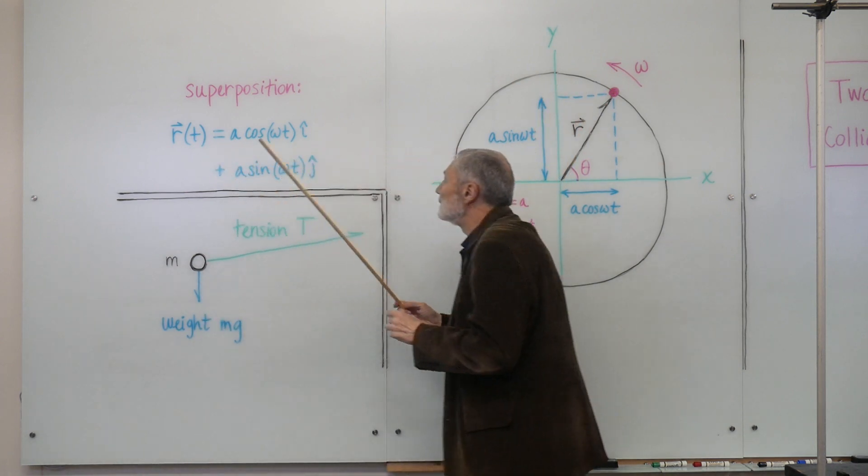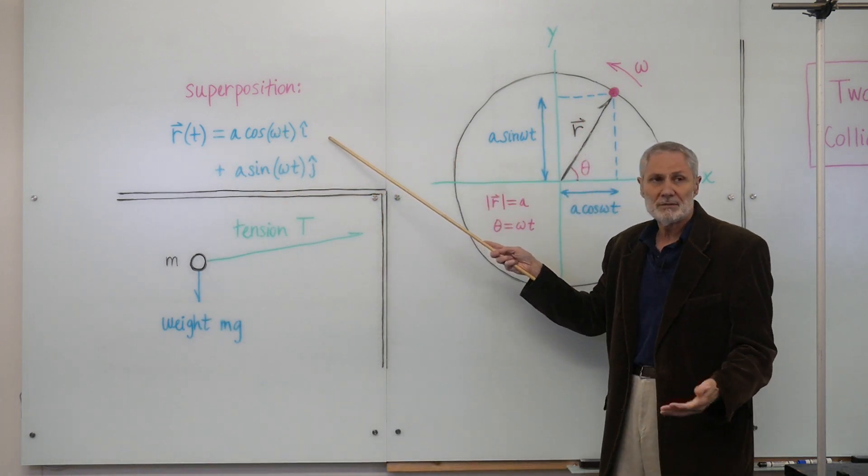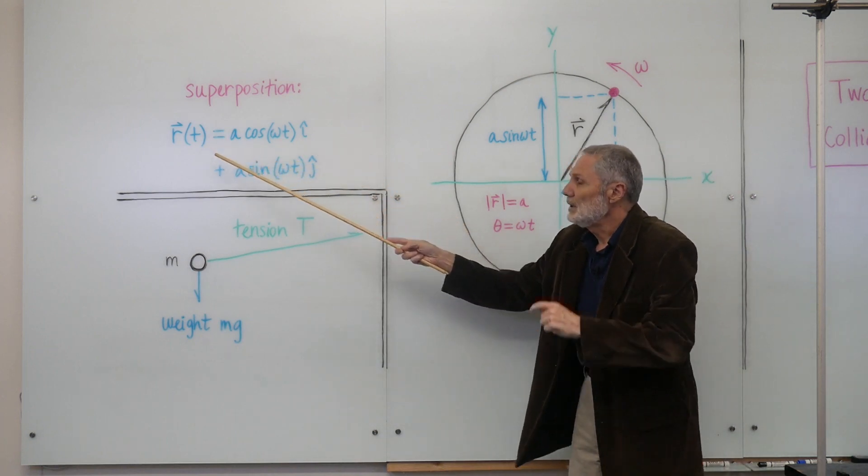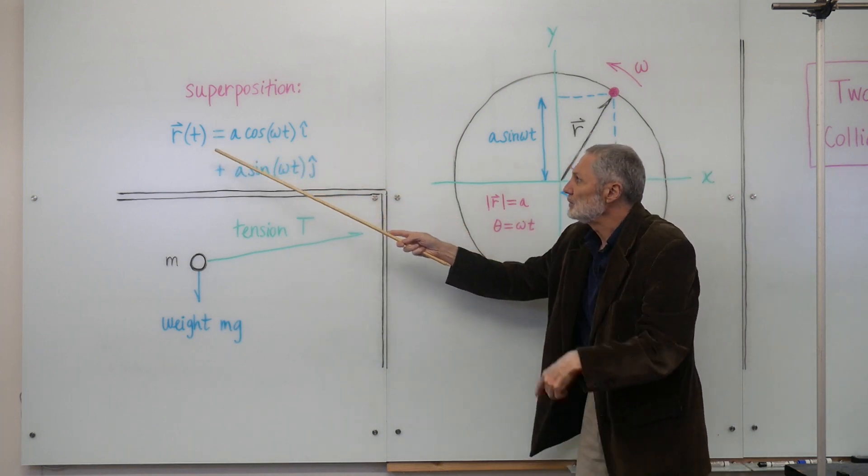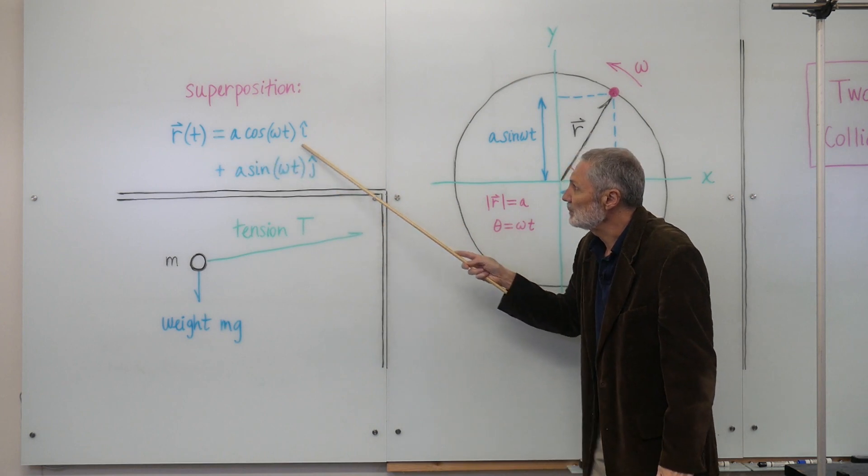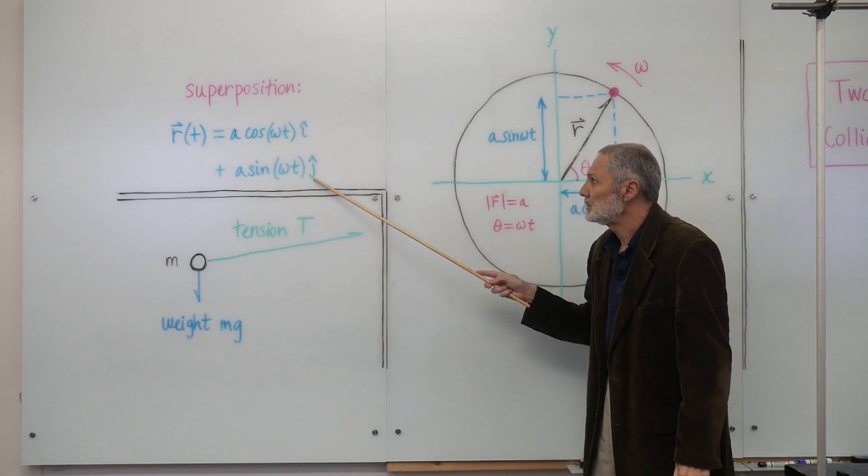Here's the mathematical representation of the superposition. So the position of the mass undergoing uniform circular motion is given by here's the x pendulum motion, and here's the y pendulum motion.